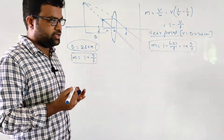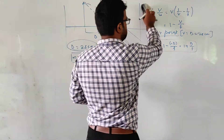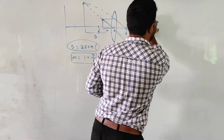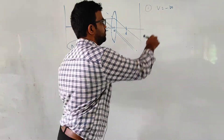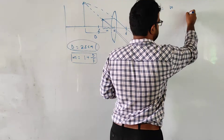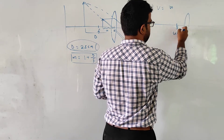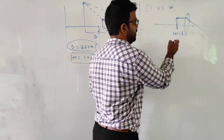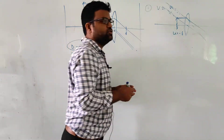Now let us take the second case: angular magnification when the image is produced at infinity. In this case, v equals minus infinity. For a convex lens, if you keep the object at the focus — when u equals minus f — one ray will pass through the focus and the ray through the optical center will be undeviated, so the image is produced at infinity.